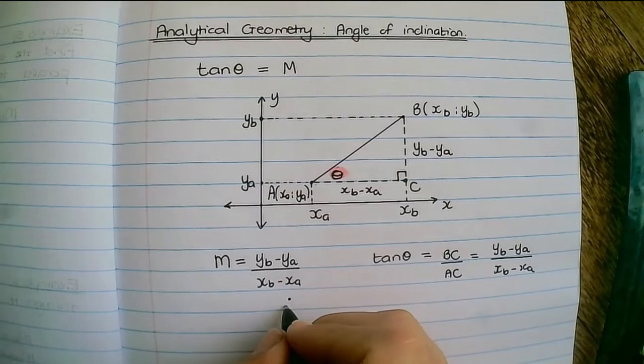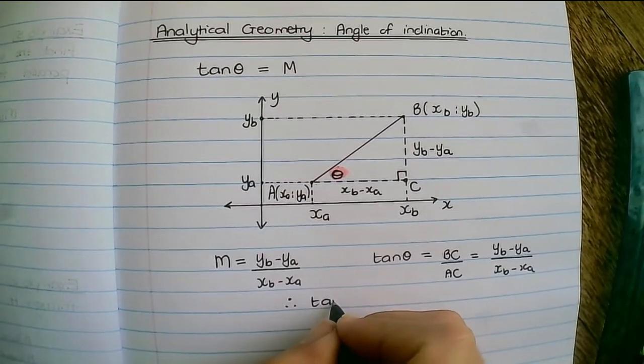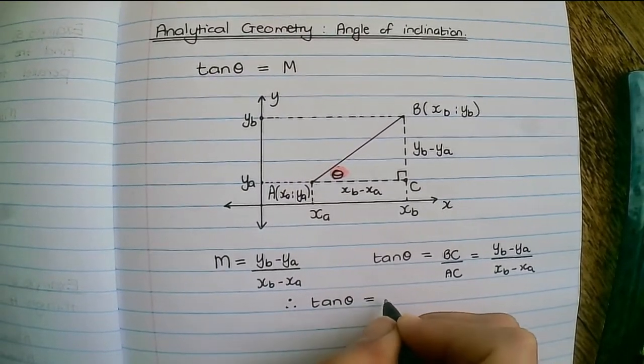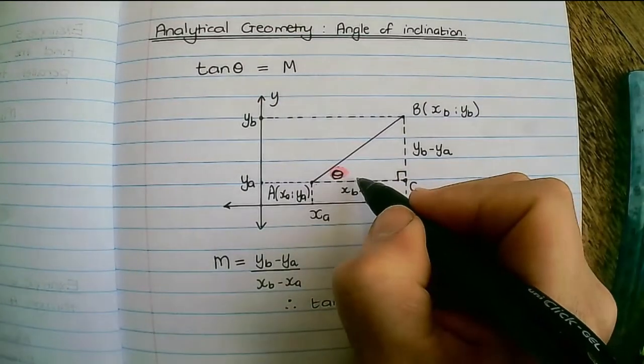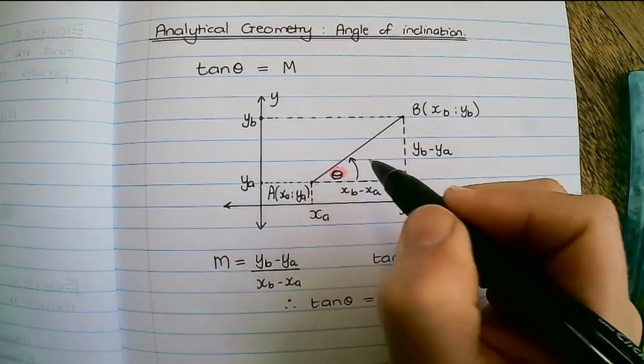So now we can see that tan theta is equal to the gradient of a line. And this is called the angle of inclination.